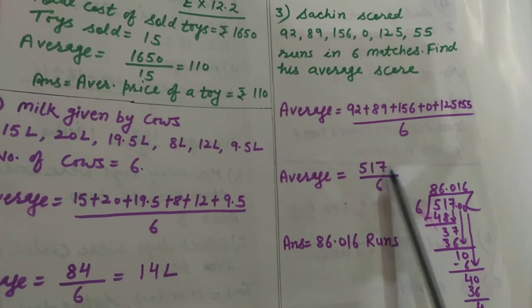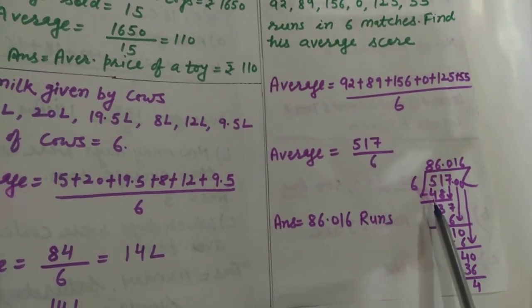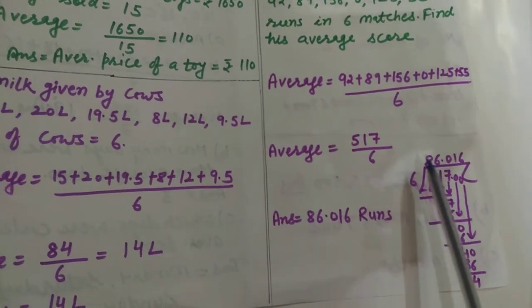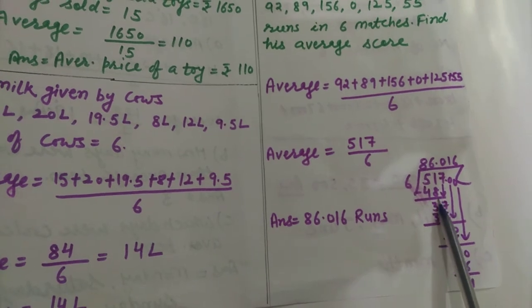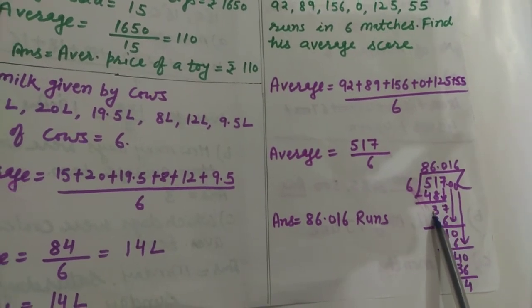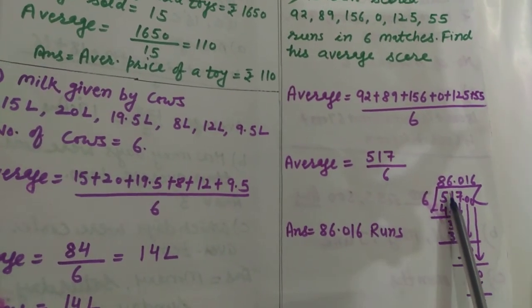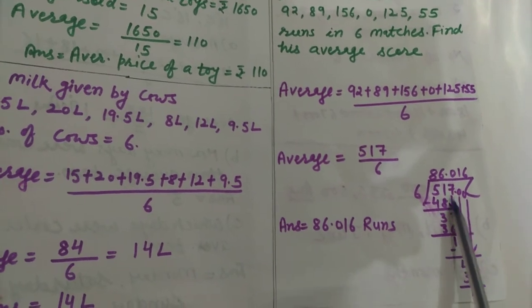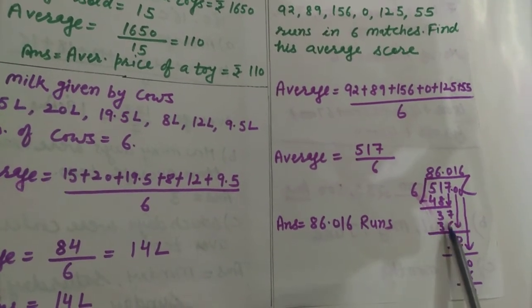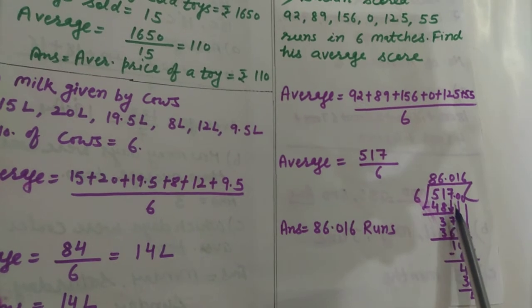Average will be 517 upon 6. To aap yahan par isko divide karenge 6 se. 6, 8 ja, 48. 11 mein se 8 minus kiye, aapne 3. After 7 aa gaya. Upar se 6, 6 ja, 36. 1 remainder aa gaya.